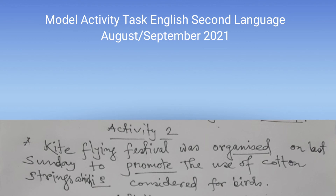A kite flying festival was organized on last Sunday. 'Organized' is past tense; the present form is 'organize.' The festival was organized to promote the use of cotton strings.